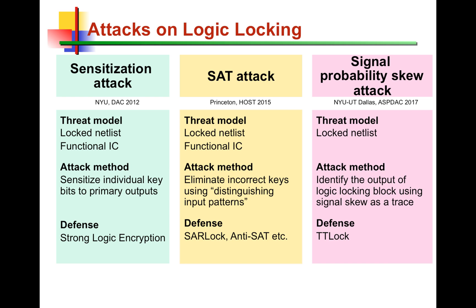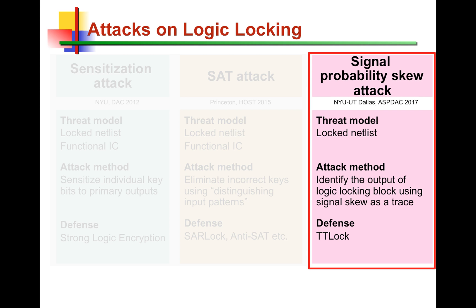Recently, we developed a signal probability skew attack targeting solutions such as anti-SAT. Anti-SAT successfully thwarts the SAT attack by adjusting the P parameter, but at the same time it leaves certain structural traces behind. We developed a signal probability skew attack that exploits this fact and performs structural analysis on the logic netlist to follow these traces, understand the boundaries of the anti-SAT block, and remove it.